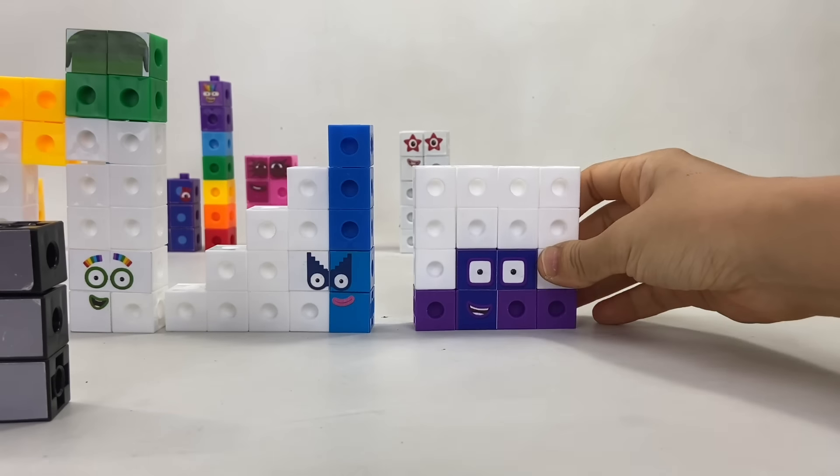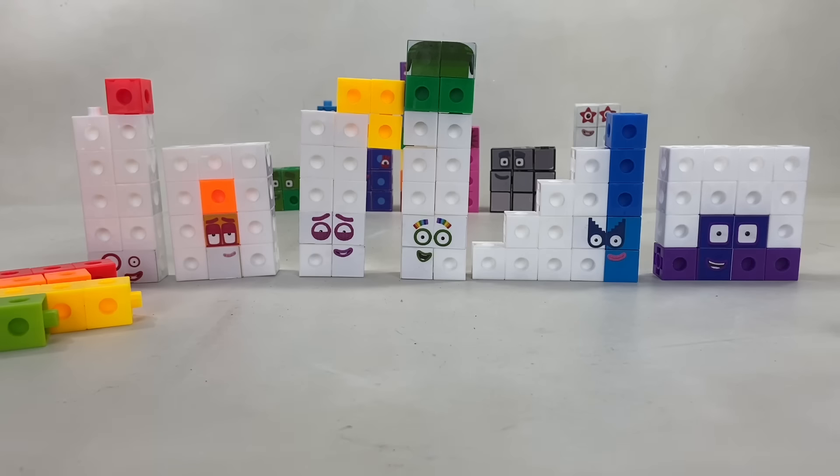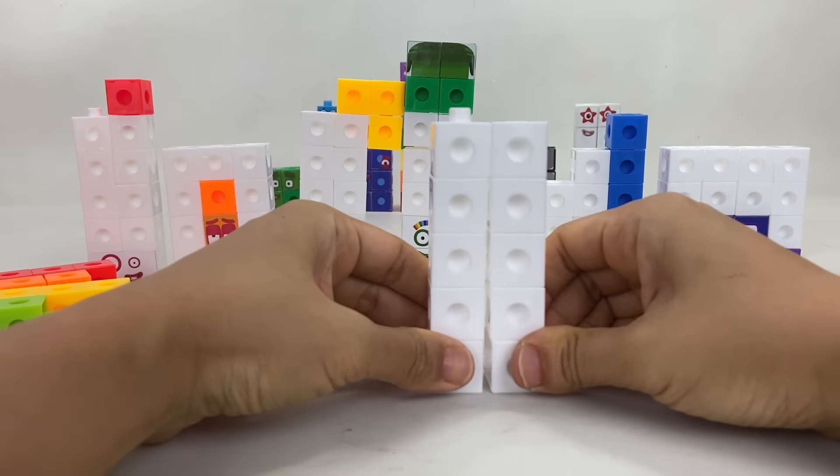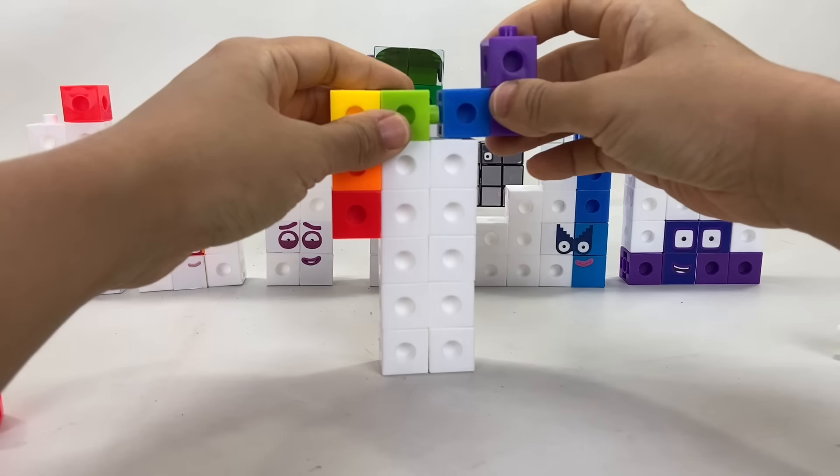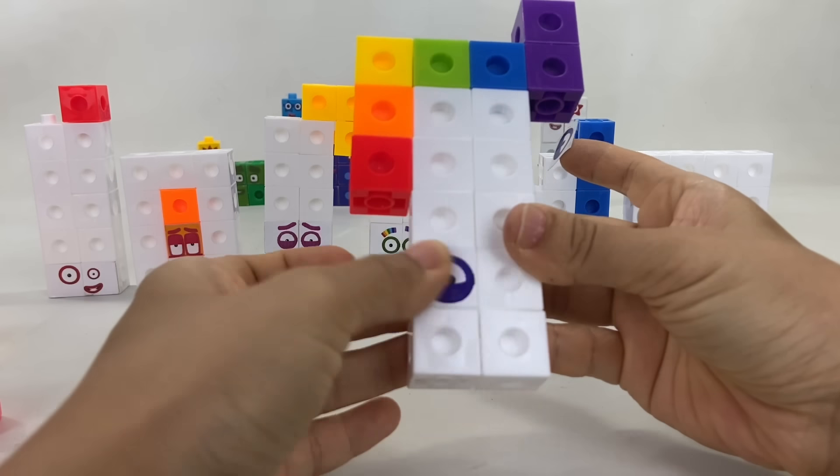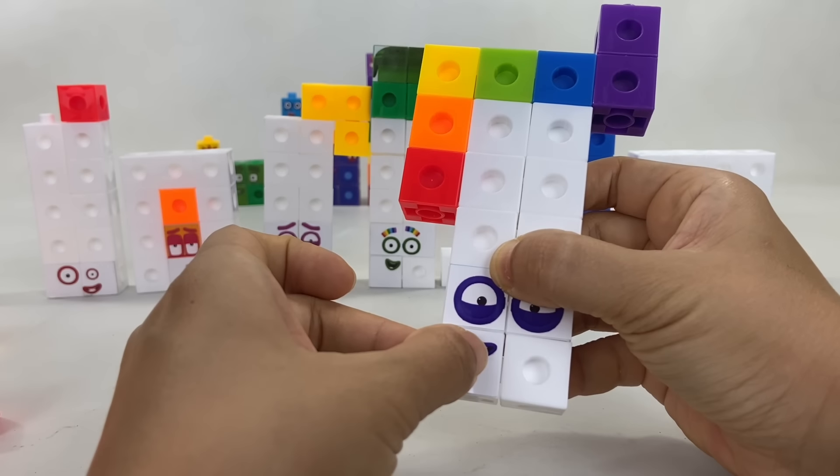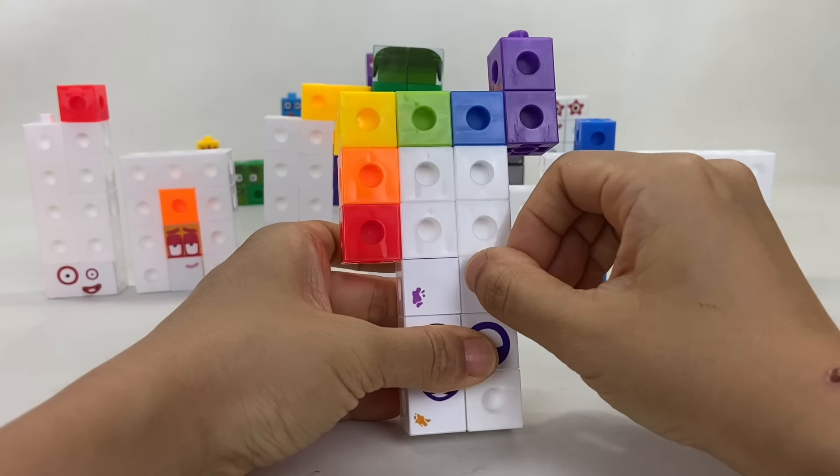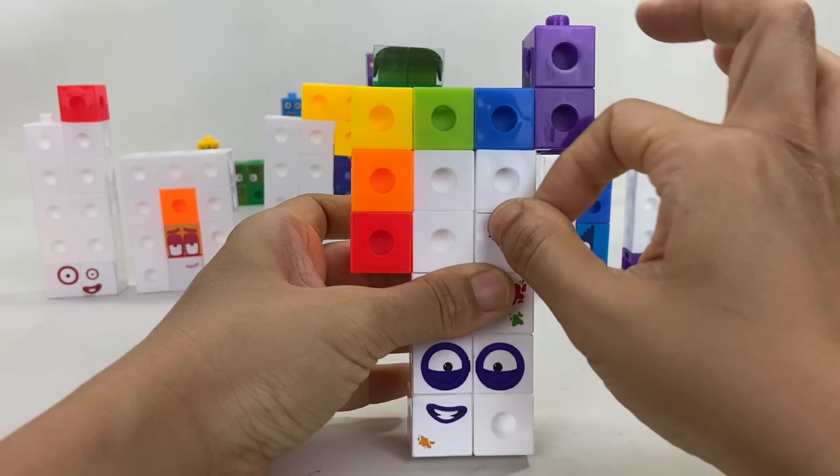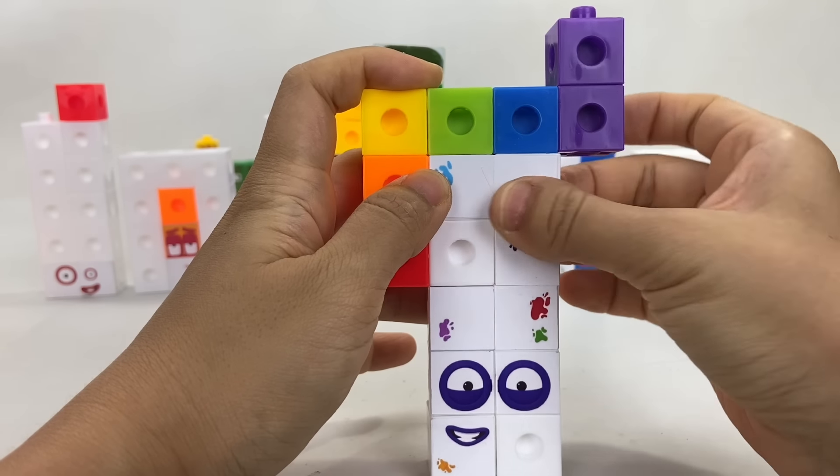Number Block 16. After 16 comes... That's right! 17! He's made up of 10 white blocks and 7 rainbow colored blocks. And because he loves to paint, you can recognize him by his 7 paint splats.